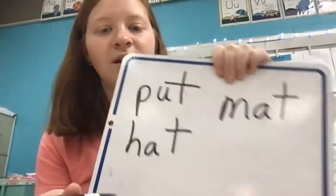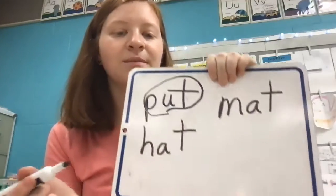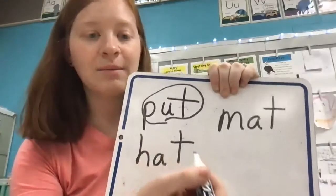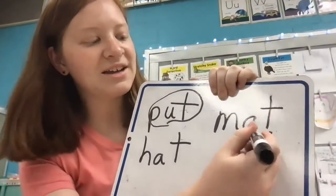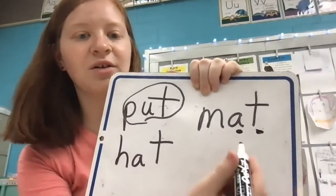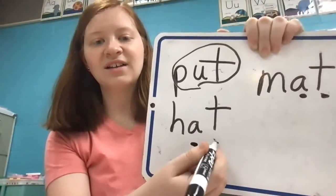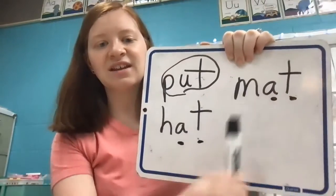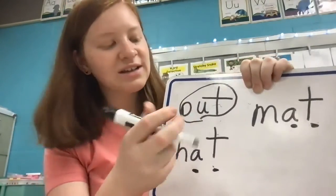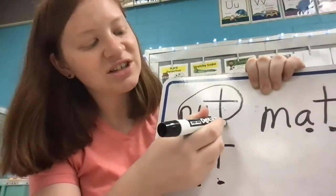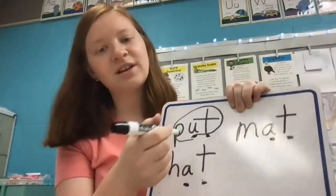So in these words, the word put is the word that does not belong. Because when we look for words that rhyme, we're looking at the middle and ending sound. So in our word mat, our middle and ending sound was 'at.' If we look at our word hat, we have 'at' again. So mat and hat have the same 'at' ending sounds. And our word put has 'ut' as its ending sound, so it is different, which is why we circled it and kicked him out.